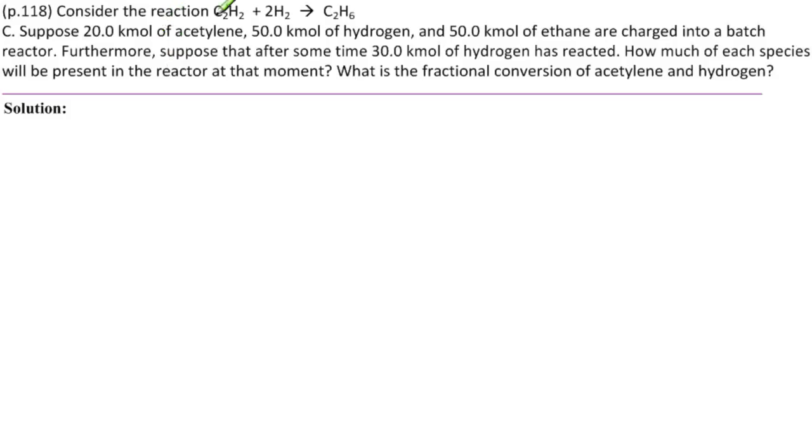Again, we're considering the reaction C2H2 plus 2H2 goes to ethane C2H6. And in this part C, we have 20 kilomoles of acetylene, 50 kilomoles of hydrogen, and 50 kilomoles of ethane are charged into a batch reactor. So it's a single charge.